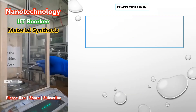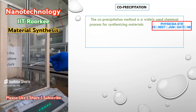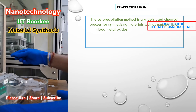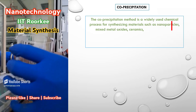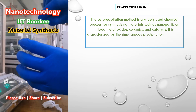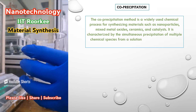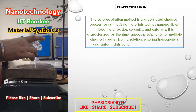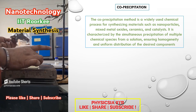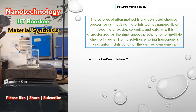The co-precipitation method is a widely used chemical process for synthesizing materials such as nanoparticles, mixed metal oxides, ceramics, and catalysts. It is characterized by the simultaneous precipitation of multiple chemical species from a solution, ensuring homogeneity and uniform distribution of the desired components.